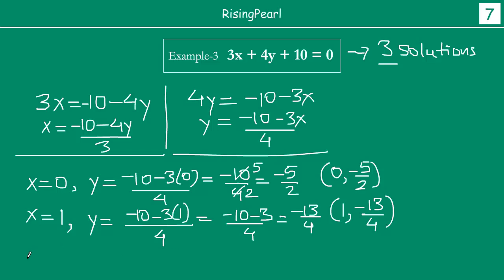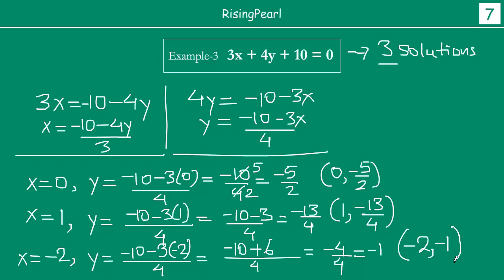And for the final value let us take x equals to minus 2. Then y will be equal to minus 10 minus 3 times minus 2 divided by 4. So the numerator becomes minus 10, now 3 times 2 is 6 but minus times minus is plus, so plus 6 by 4. This becomes minus 10 plus 6 is minus 4 by 4. If you cancel this, it will be minus 1. So our third solution is x is minus 2 and y is minus 1. So if we needed three solutions, we found out solution one, solution two, and solution three.